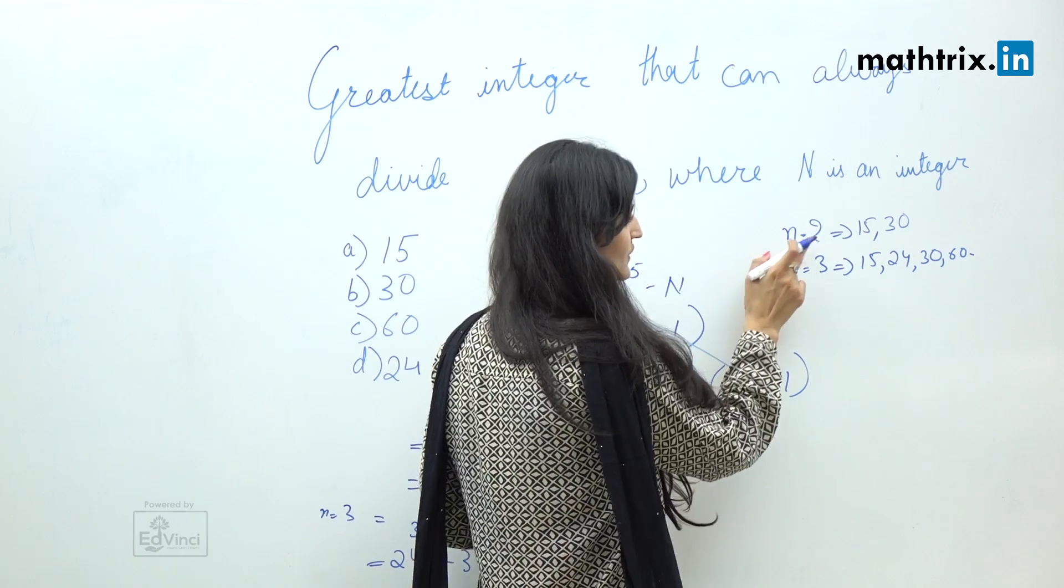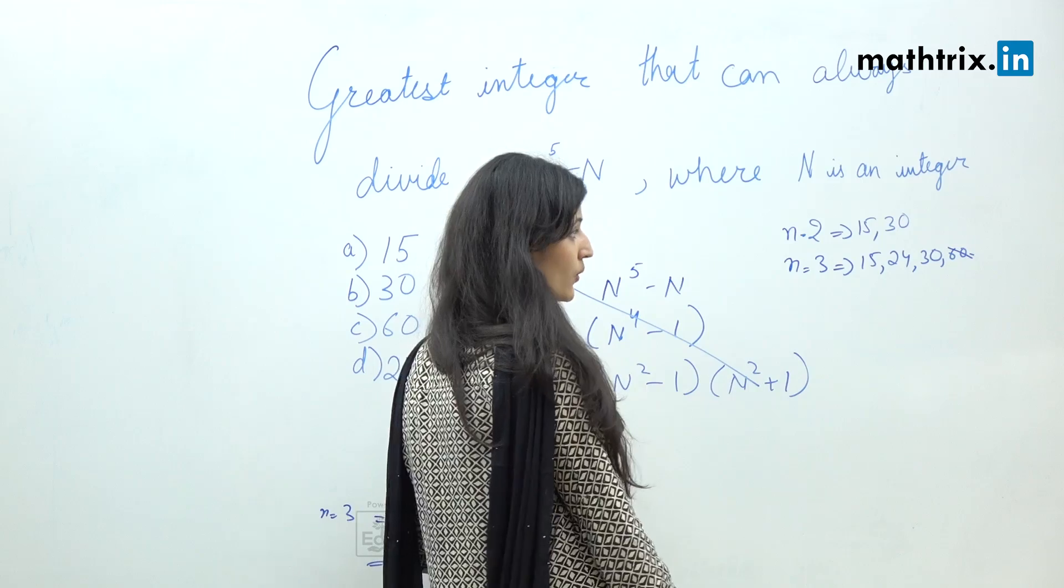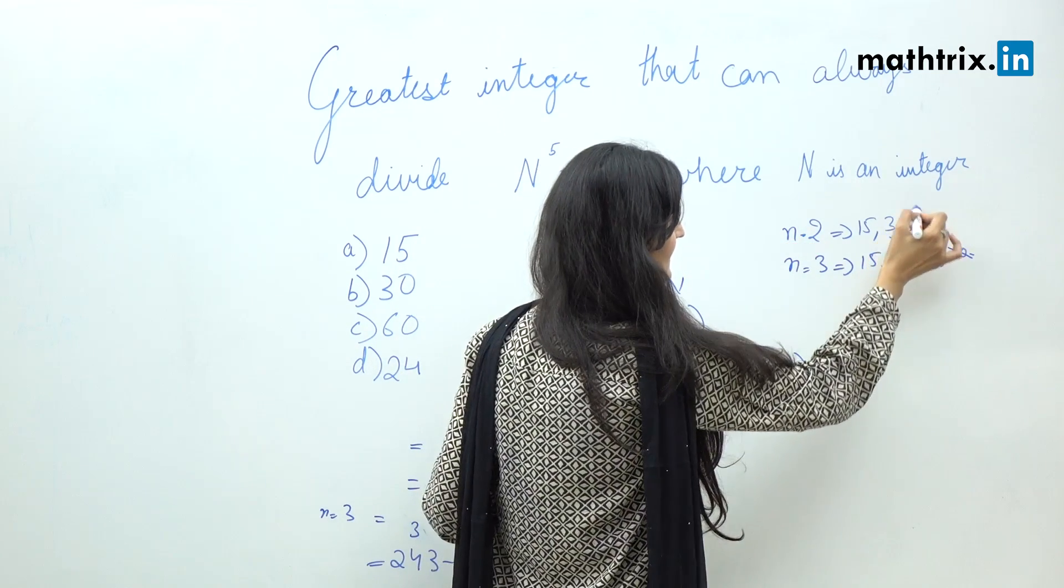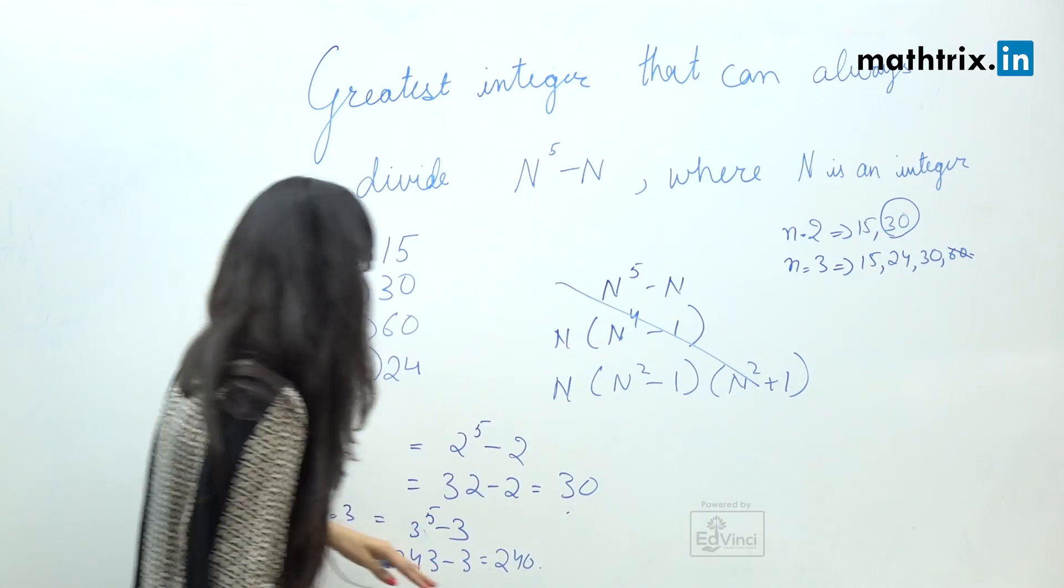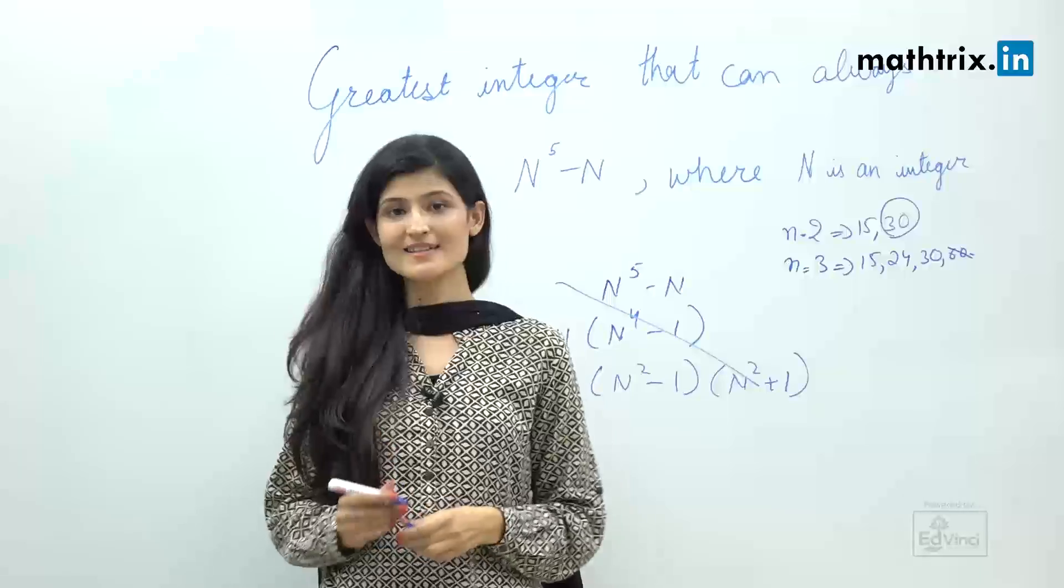But if you can see when n equals 2 we cannot divide it by 60. So when n equals 2 the highest integer which can divide n raised to the power 5 minus n is 30. So our answer is 30.